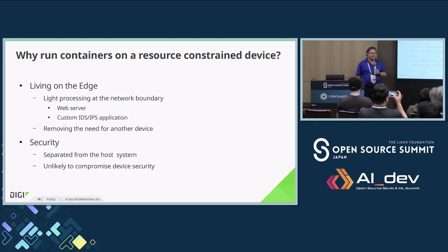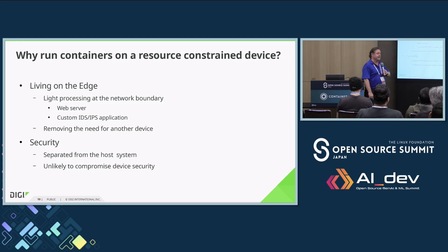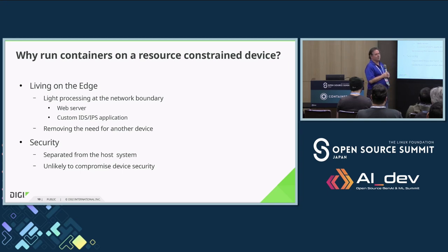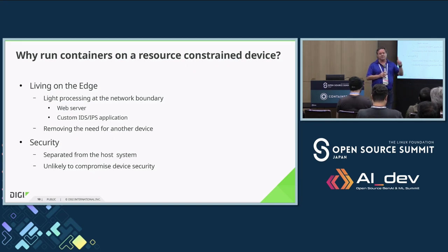Living on the edge is a trendy thing to say, but it does mean you can run some basic edge programs even on something that size. You can run a very small web server. One that's actually quite useful is a custom IDS/IPS solution - intrusion detection. Because these things are a router, you can take the packets straight into the container, run your custom solution, and then push them back out again - so you don't have to modify the operating system on the device. And again, security: it's separated from the host system. It's unlikely - I won't say it can't - but it's unlikely to compromise device security.